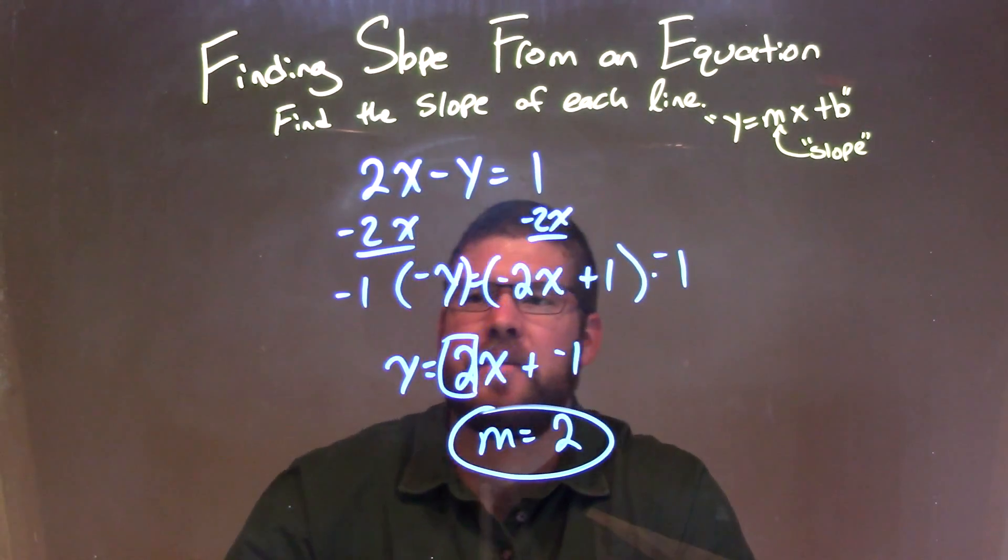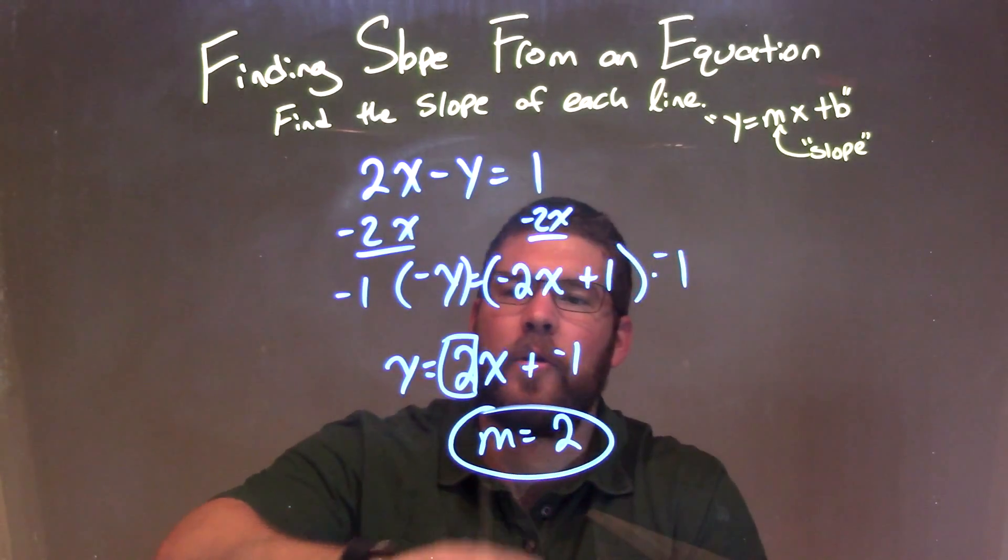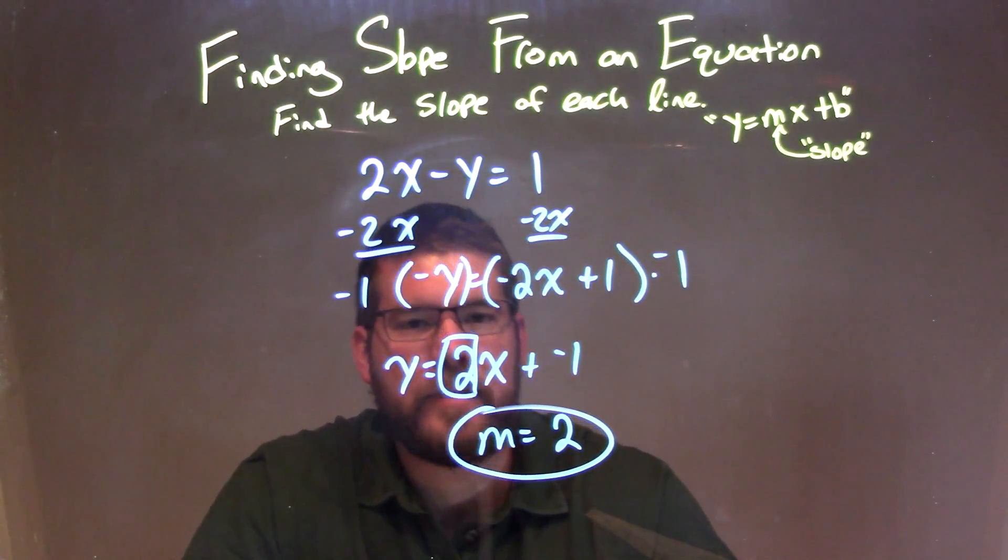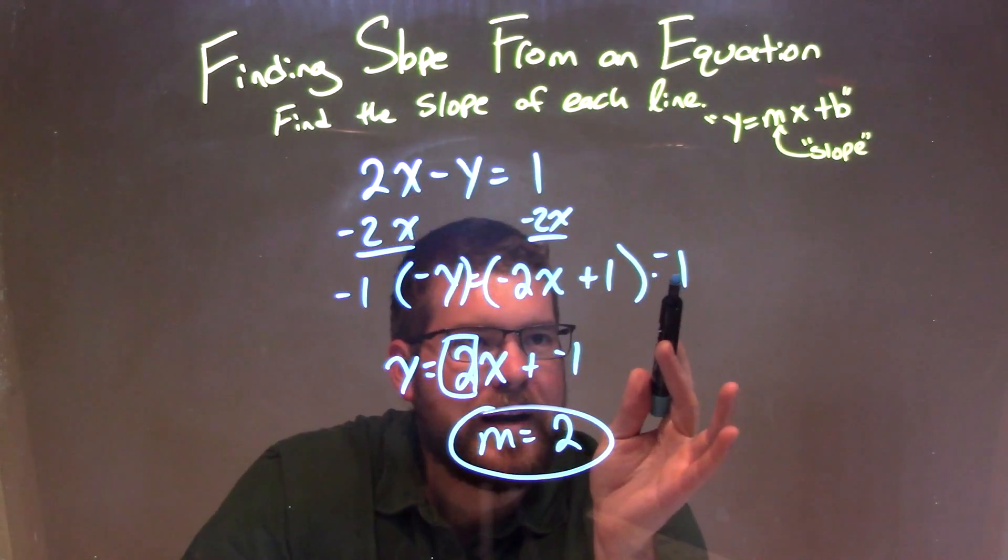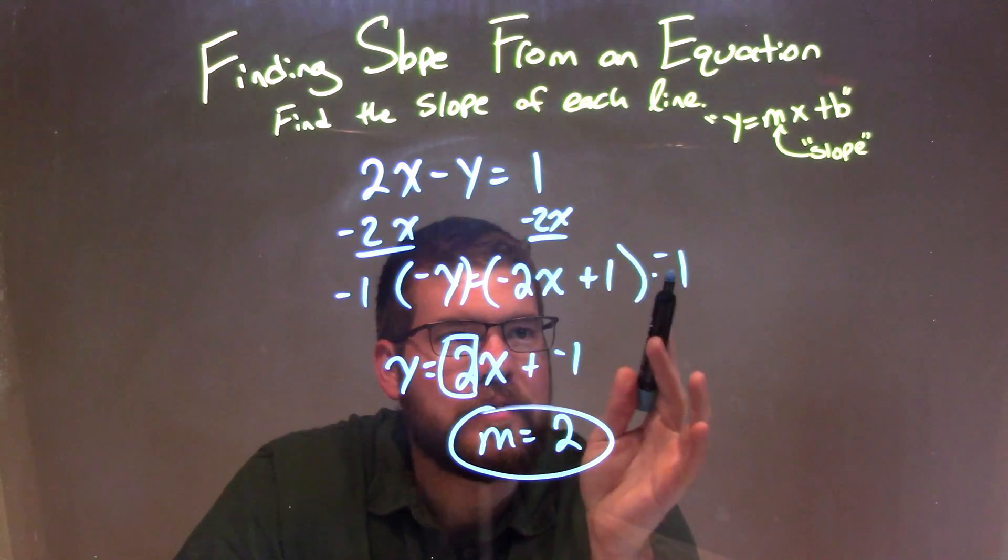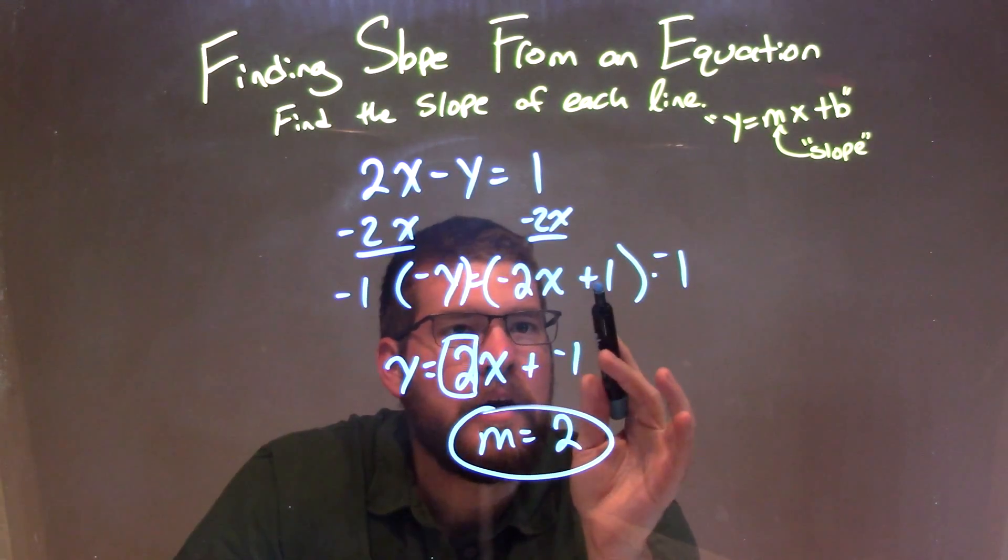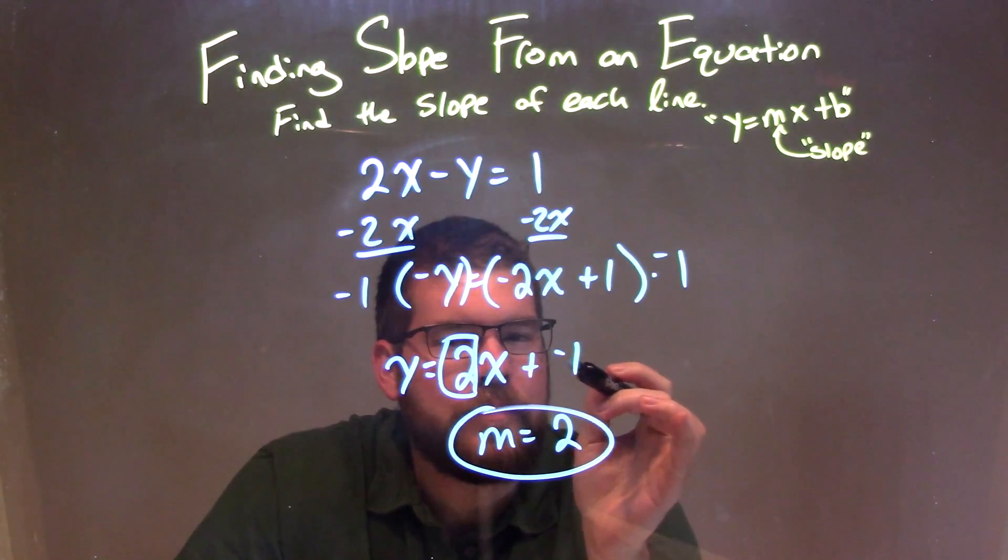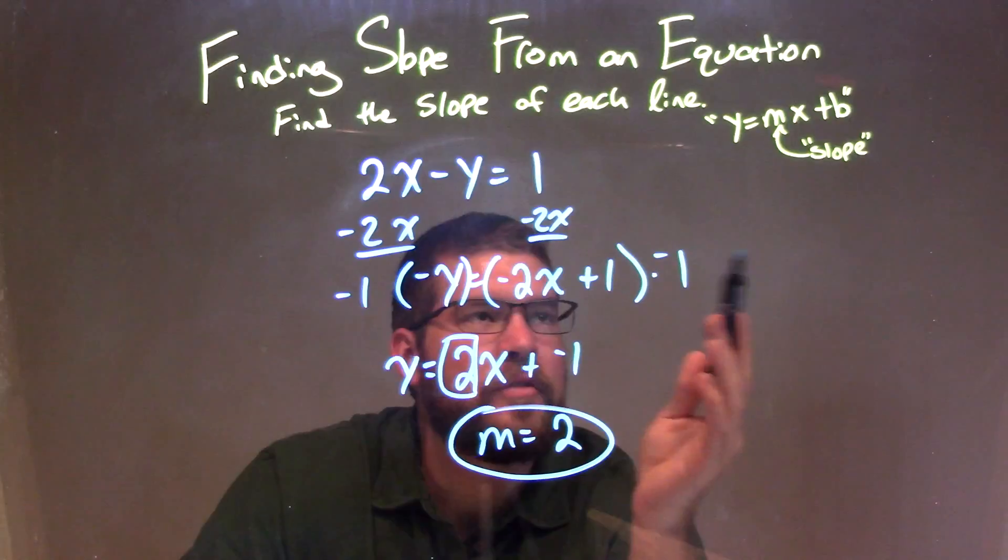To get y isolated, I multiply both sides by negative 1, giving me positive y by itself. When I distribute the negative 1 across, negative 2x times negative 1 is positive 2x, and 1 times negative 1 is negative 1. So we have 2x minus 1 on the right, which is slope intercept form.